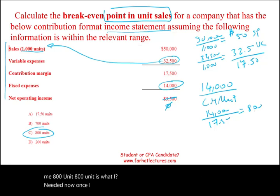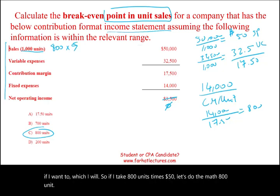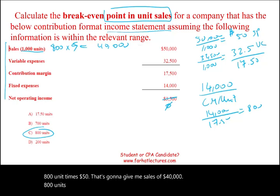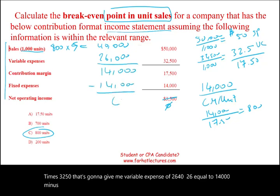We can verify: 800 units times $50 equals $40,000 in sales. 800 units times $32.50 equals $26,000 in variable expenses. $40,000 minus $26,000 equals $14,000 contribution margin. $14,000 minus $14,000 fixed cost equals zero — break-even confirmed.